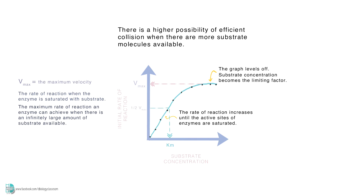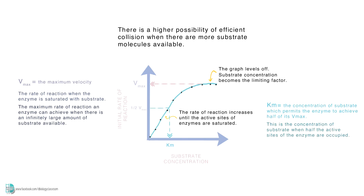Km, or the Michaelis-Menten constant, is the concentration of substrate which permits the enzyme to achieve half of its Vmax. It is when half the active sites of the enzyme are occupied by the substrate.